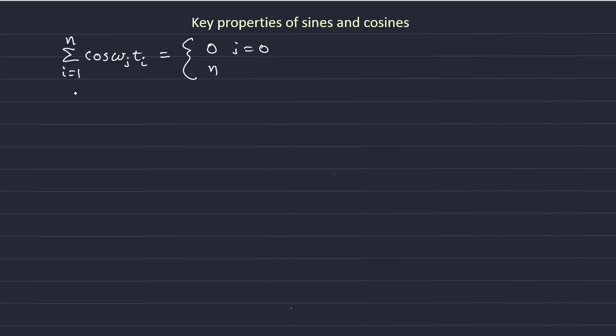Likewise, if we have a sine function of some wave number j, that's also going to sum to 0. And if there's no oscillation, that is if omega j is 0, then that's also equal to 0.